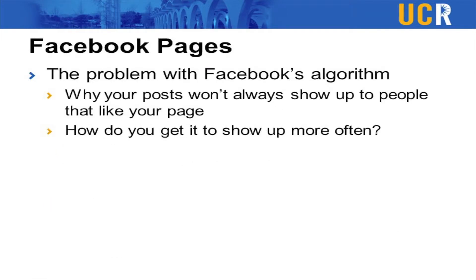One big problem with Facebook is that there's an algorithm for how often your posts show up. If you have 100 people that like your page, posting a status doesn't mean all 100 will see it. This is why it's important to create statuses, photos, and events that people engage with — if people like photos or comment on a status, it's more likely to show up for them in the future. If someone likes a page but doesn't interact, they're less likely to ever see it again. Create content that people are liking, sharing, and commenting on.